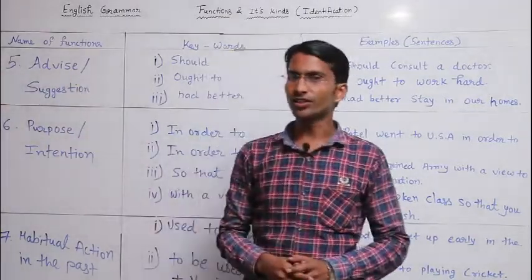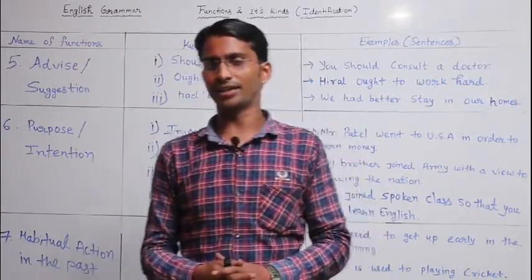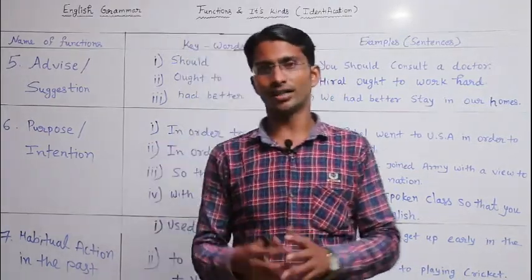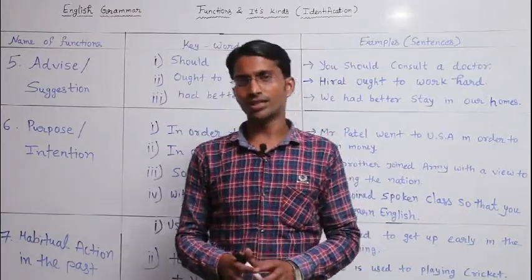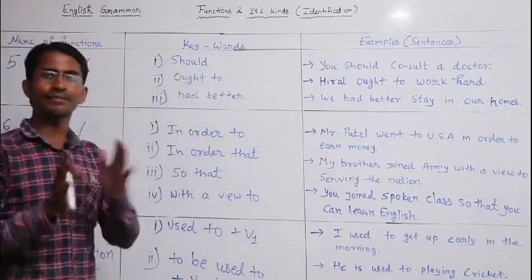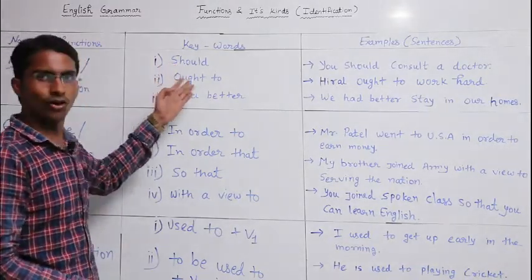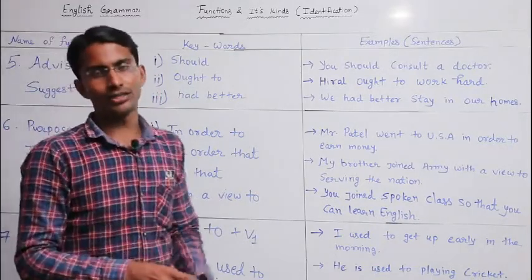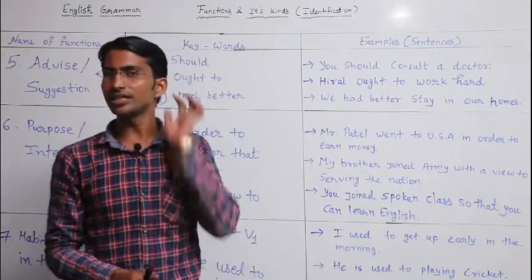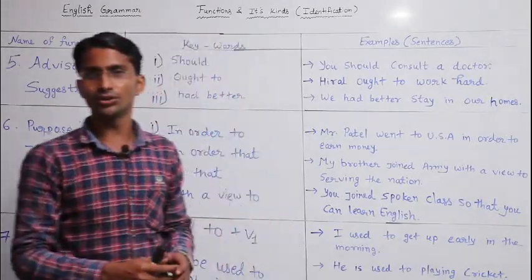The fifth function is 'advise and suggestion.' Advise means to give advice or suggestions to someone. The keywords of the advise function are: 'should,' 'ought to,' and 'had better.' These are the three keywords of this function. Let us look at some examples to understand when and how to use them.